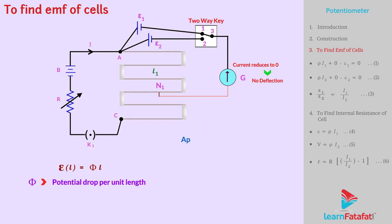So, let us now apply Kirchhoff's loop law for loop A-N₁-G-3-1-A. We get φl₁ + 0 - ε₁ = 0. Label this as equation number 1.